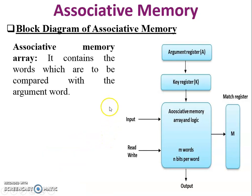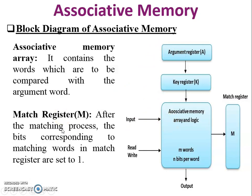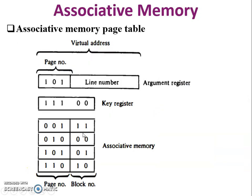Third, the associative memory array — whatever you want to search, which is stored in the argument register, is available in the associative memory array. Fourth, the match register — when data is found in associative memory, the match register is set to one; otherwise it is zero.